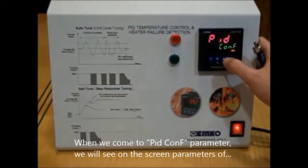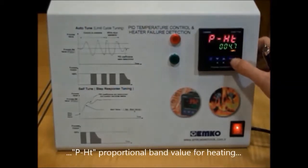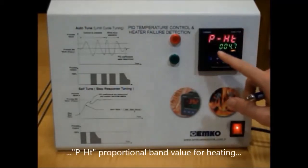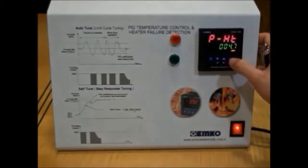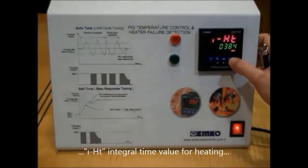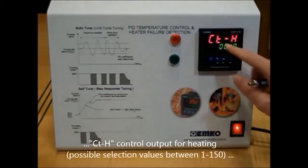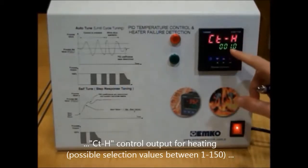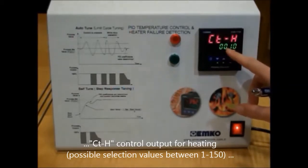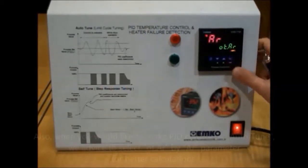Also, we came to ID configuration parameter. We are seeing now, this is for proportional bound values. And integral time. Derivative time. Control output for heating. We can select here between 1 and 150.